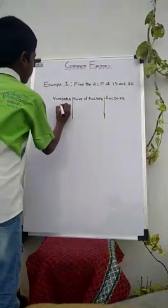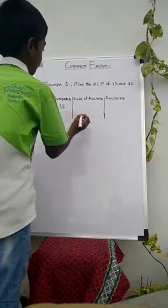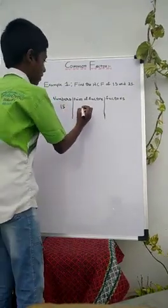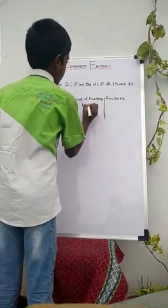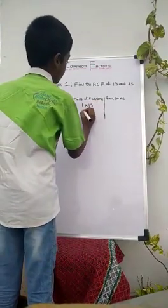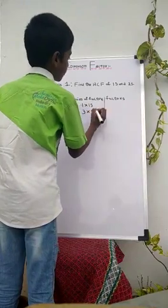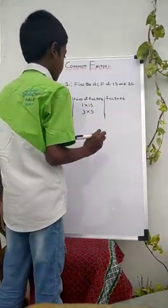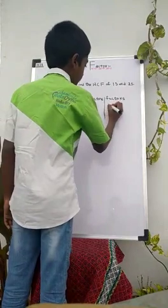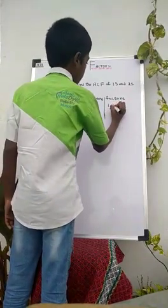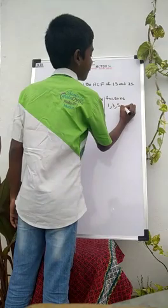Number 15. Here the pairs of factors of number 15 are: 1 × 15 = 15, and 3 × 5 = 15. So the factors of 15 are 1, 3, 5, and 15.